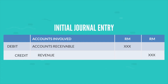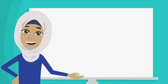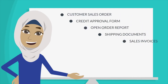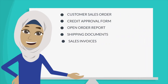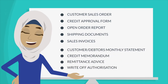There must be a basis for this, and that basis comes from source documents and accounting records. Among others are: customer's sales order, credit approval form, open order report, shipping documents, sales invoices, and other documents — namely the customer or debtor's monthly statements, credit memorandum, remittance advice, and write-off authorization.